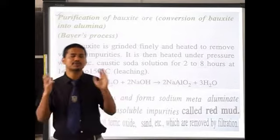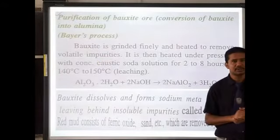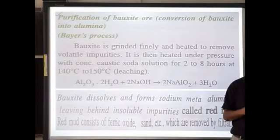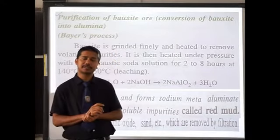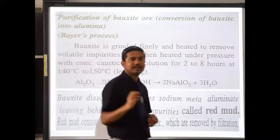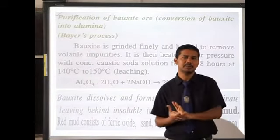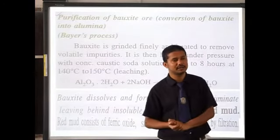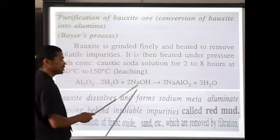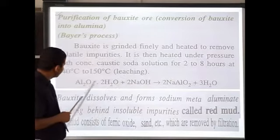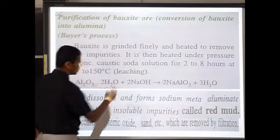For step two, we take a vessel with concentrated sodium hydroxide solution, put in the finely powdered bauxite, and heat the mixture at 140 to 150 degrees Celsius. Bauxite dissolves in the sodium hydroxide solution while the rest of the impurities remain insoluble. This is the reaction taking place in leaching.